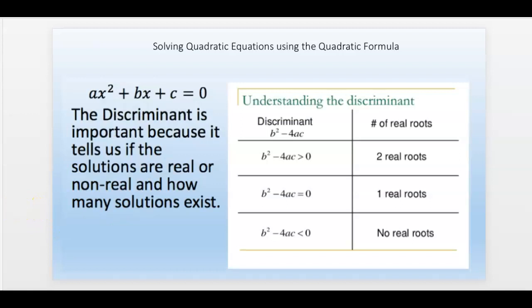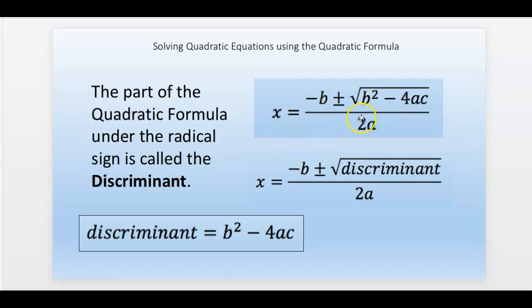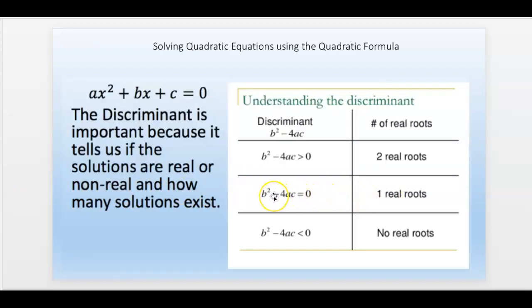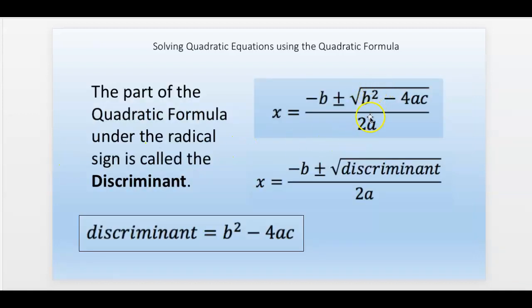The discriminant gives us some information about the number of real roots. If the discriminant is greater than zero, then you're going to have two real roots because you're going to have a plus side and a minus side. If the discriminant equals zero, then there's only one real root or real solution. If this is zero, then there is no plus or minus side. There's just one number here, so there's only one solution.